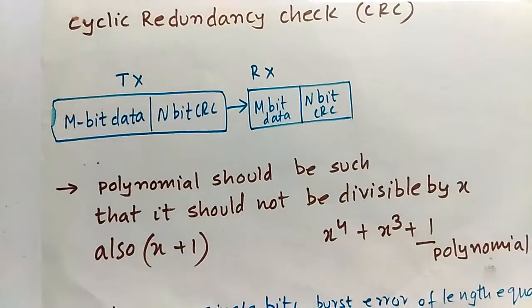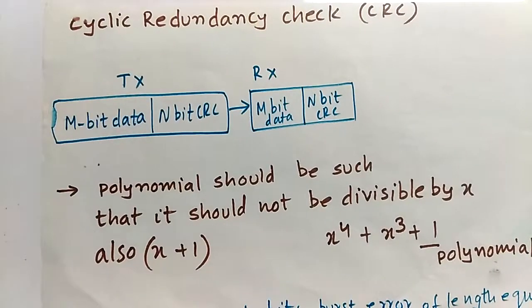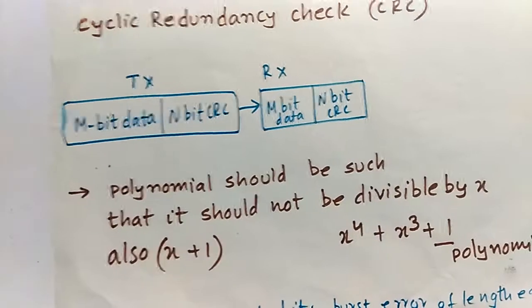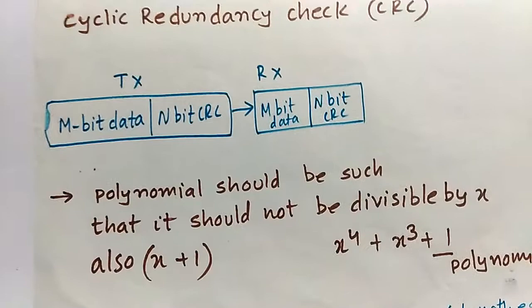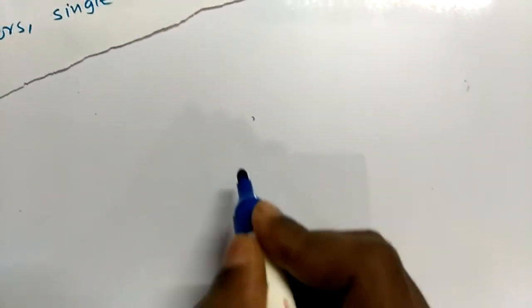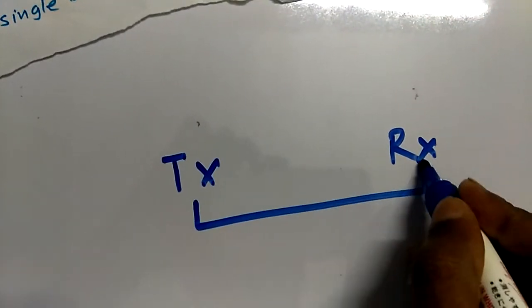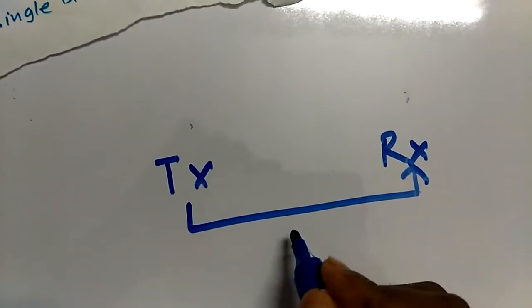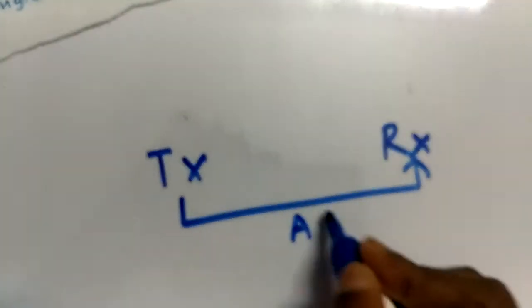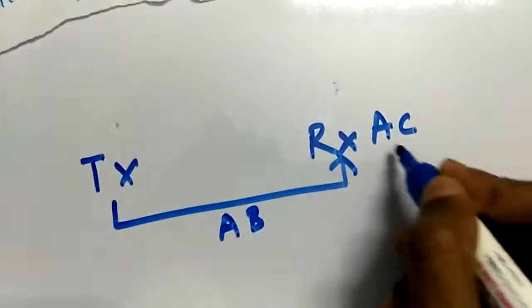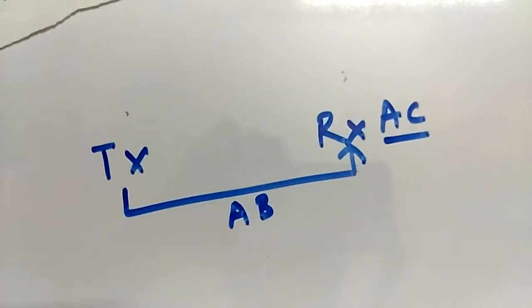Welcome back. Today's topic is cyclic redundancy check (CRC). CRC is an error detection method — not correction — used only for detecting errors. Consider two systems, a transmitter (TX) and a receiver (RX). TX sends data, say 'AB', but RX receives 'AC'. The data has been corrupted and an error has occurred at the receiver.